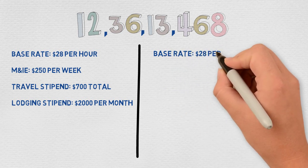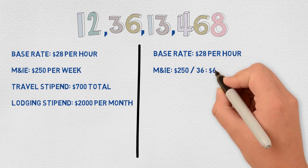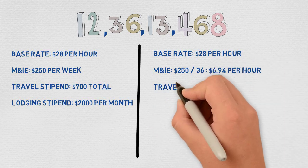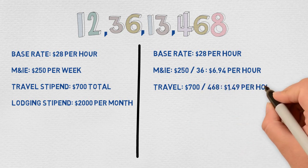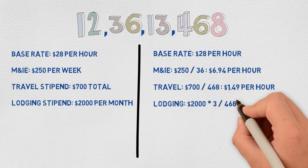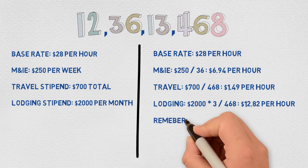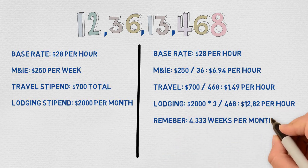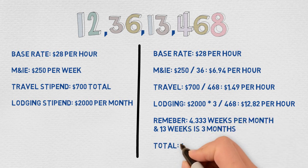The base rate would remain $28 per hour. Divide $250 by 36 hours per week for $6.94 per hour. Divide $700 by 468 hours for $1.49 per hour. Multiply $2,000 by 3 months and divide by 468 hours for $12.82 per hour. Remember, there are 4.3 weeks in a month and 13 weeks equals three months. Finally, add everything together for a total value of $49.25 per hour.